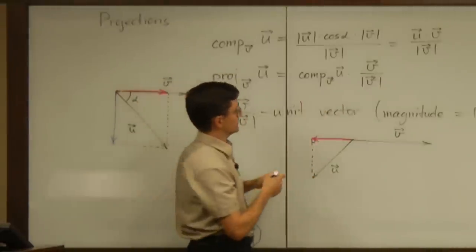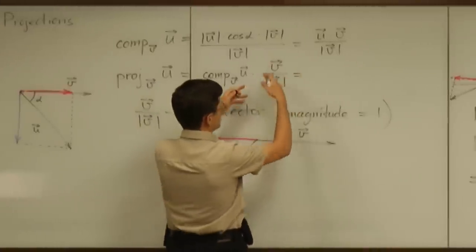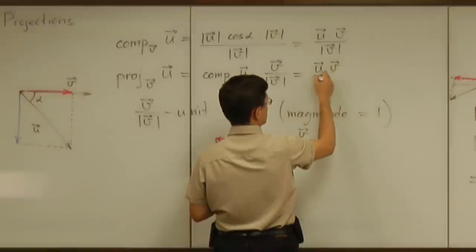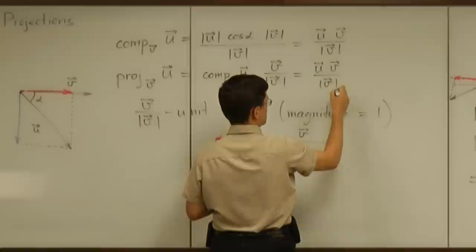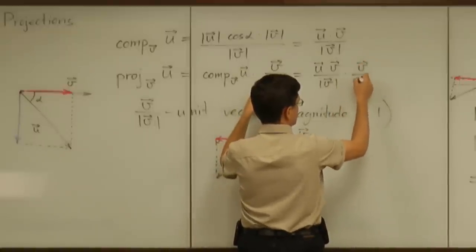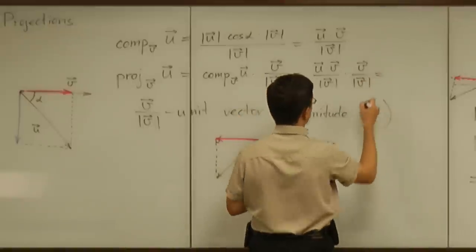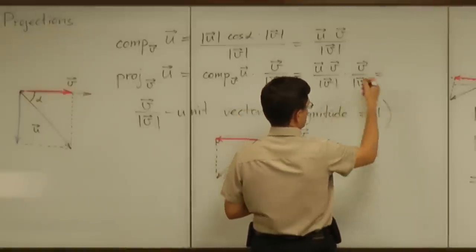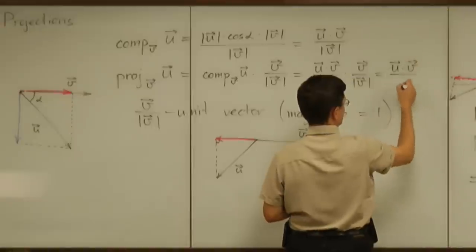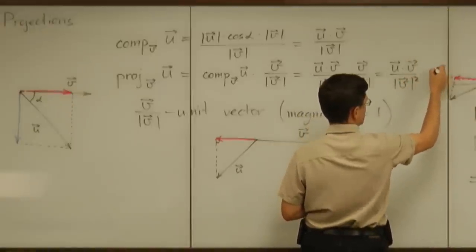And if you continue writing this formula, it's u dot v divided by the magnitude of v, multiplied by the unit vector in the direction of v. And that is u dot v divided by the magnitude of v squared times v.